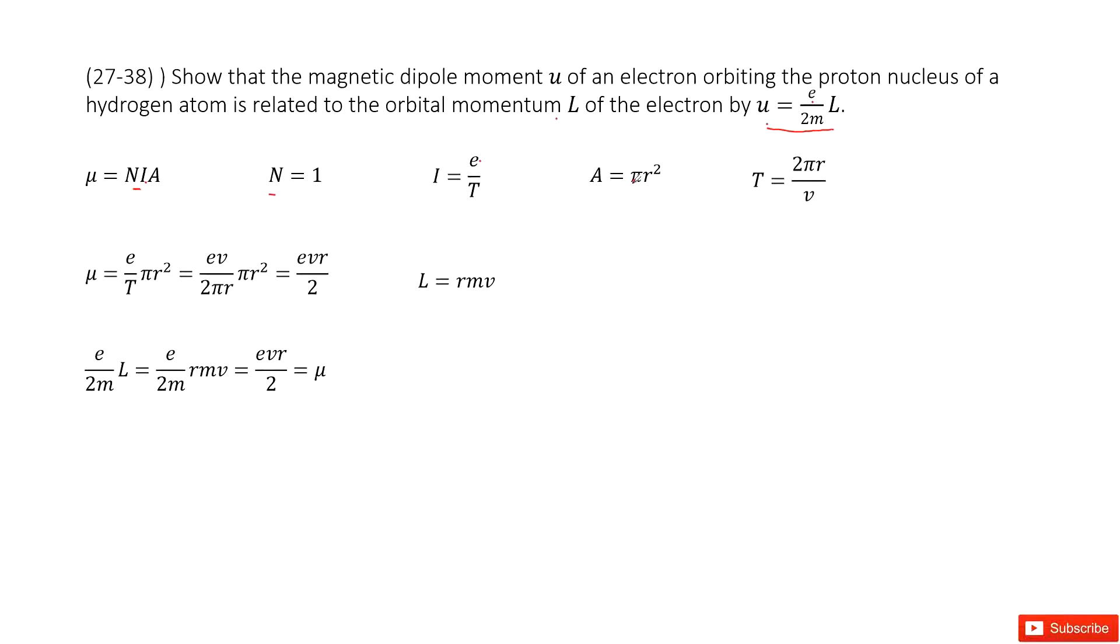And the A is the πr squared, the cross-sectional area. The next one, we need to find the T because we don't know T yet. The T is just the period. So we can use the distance it traveled for one circle, 2πr divided by V.